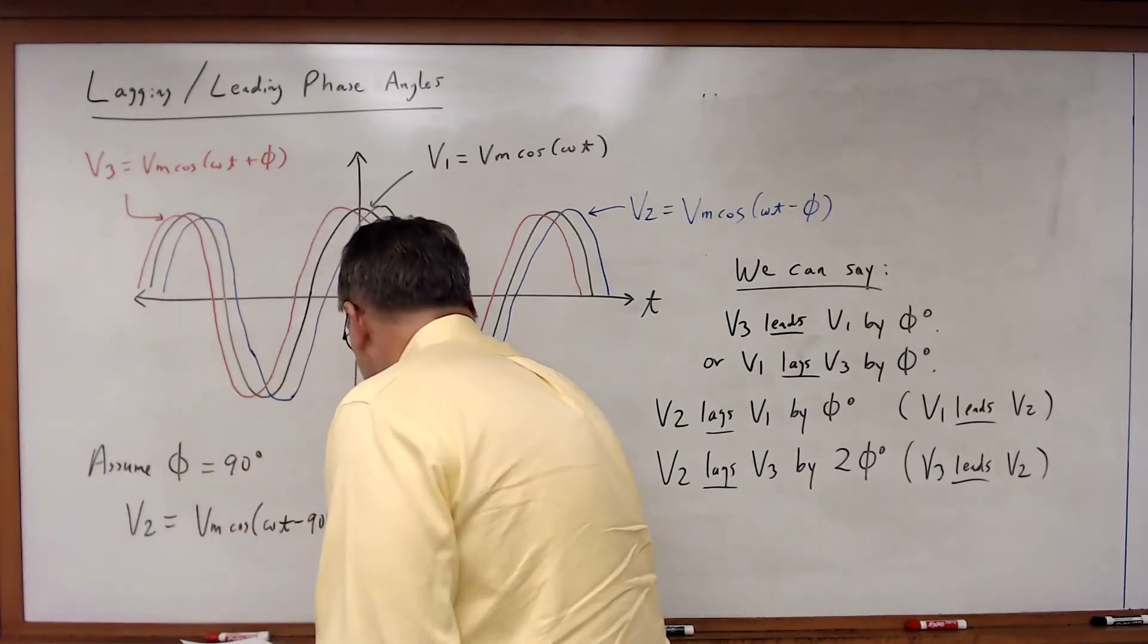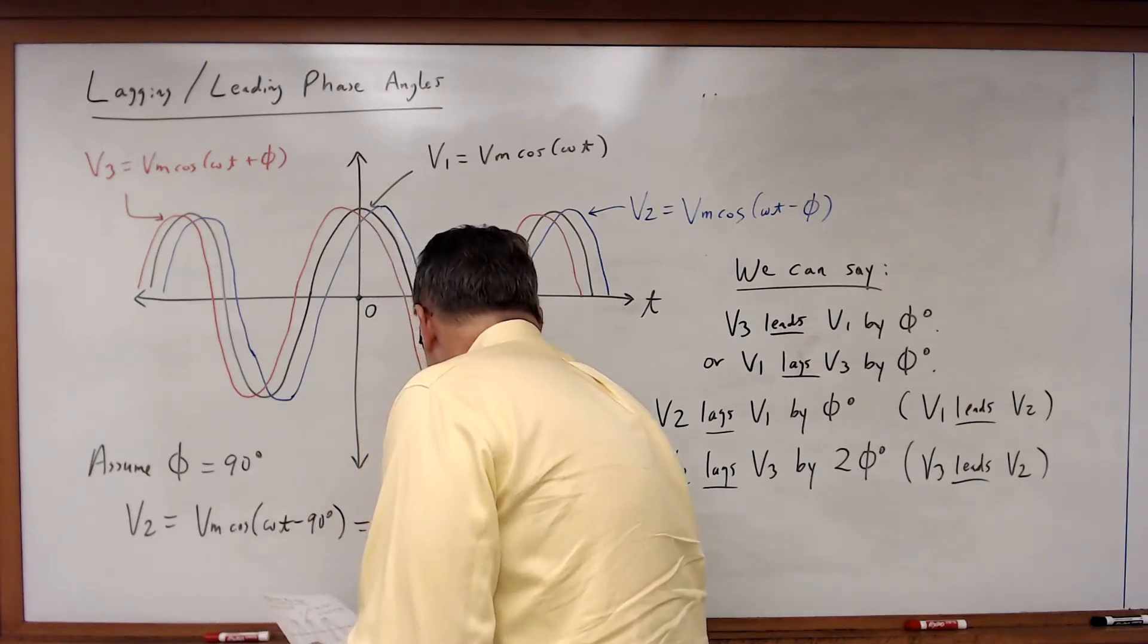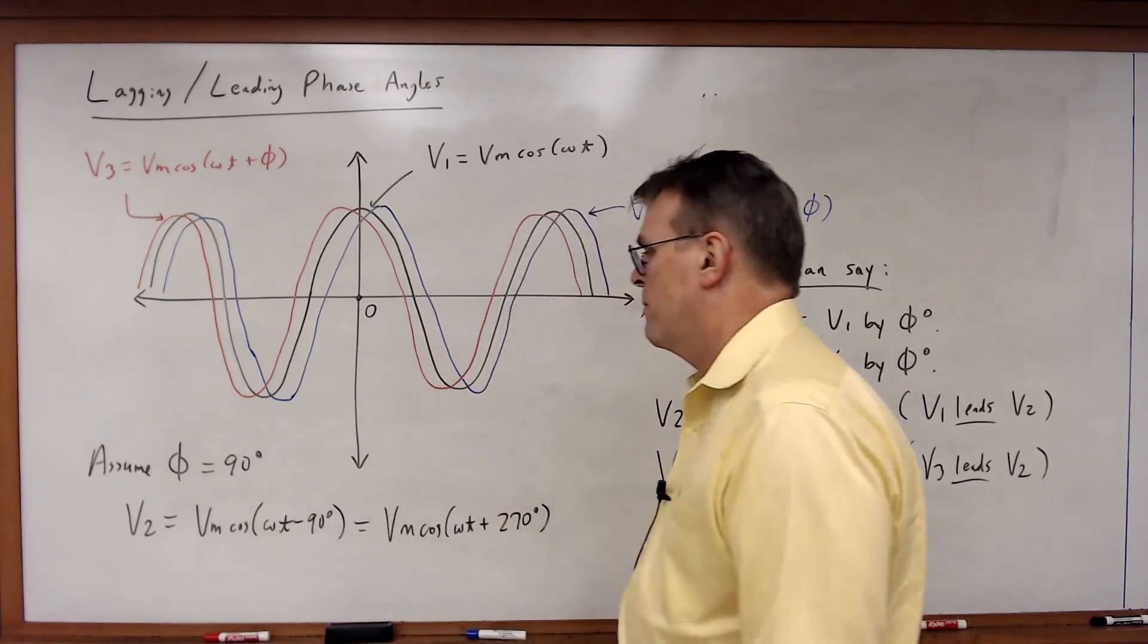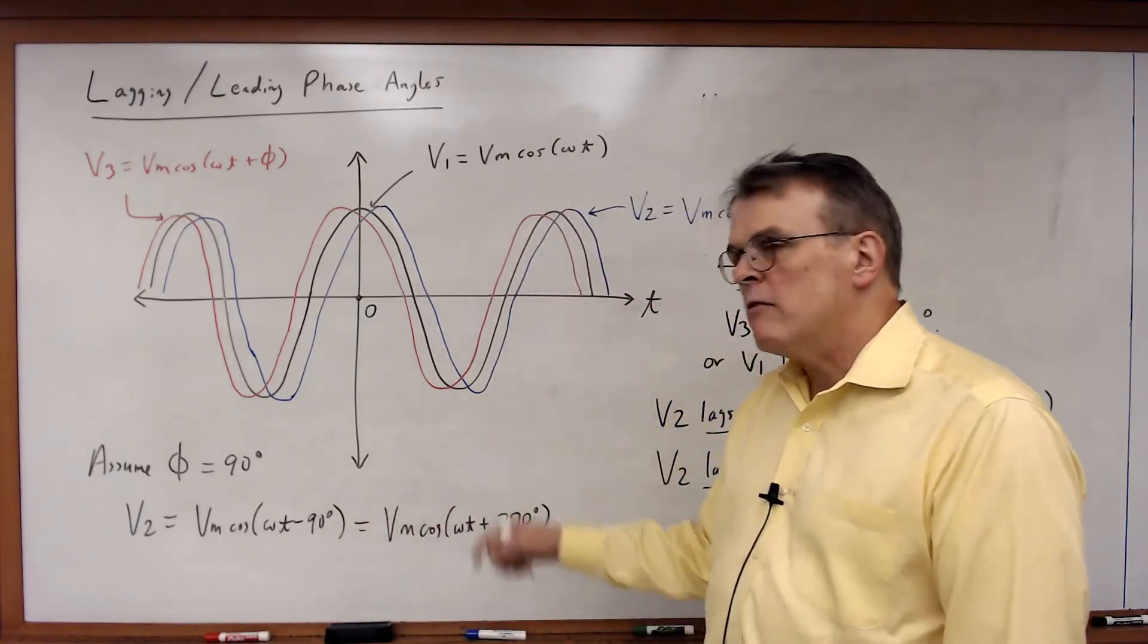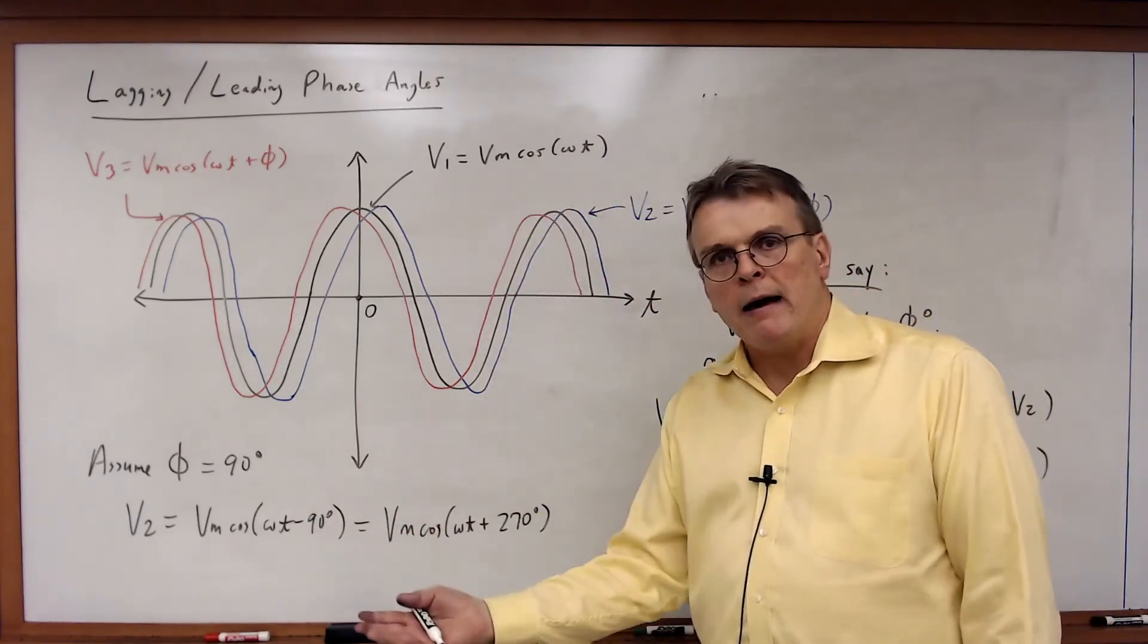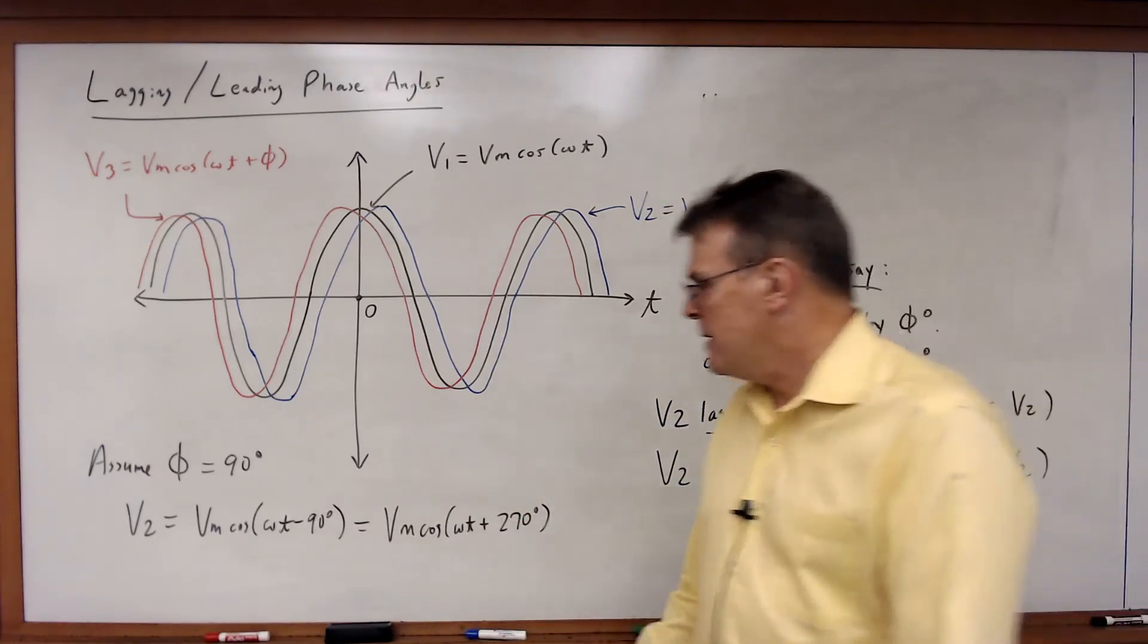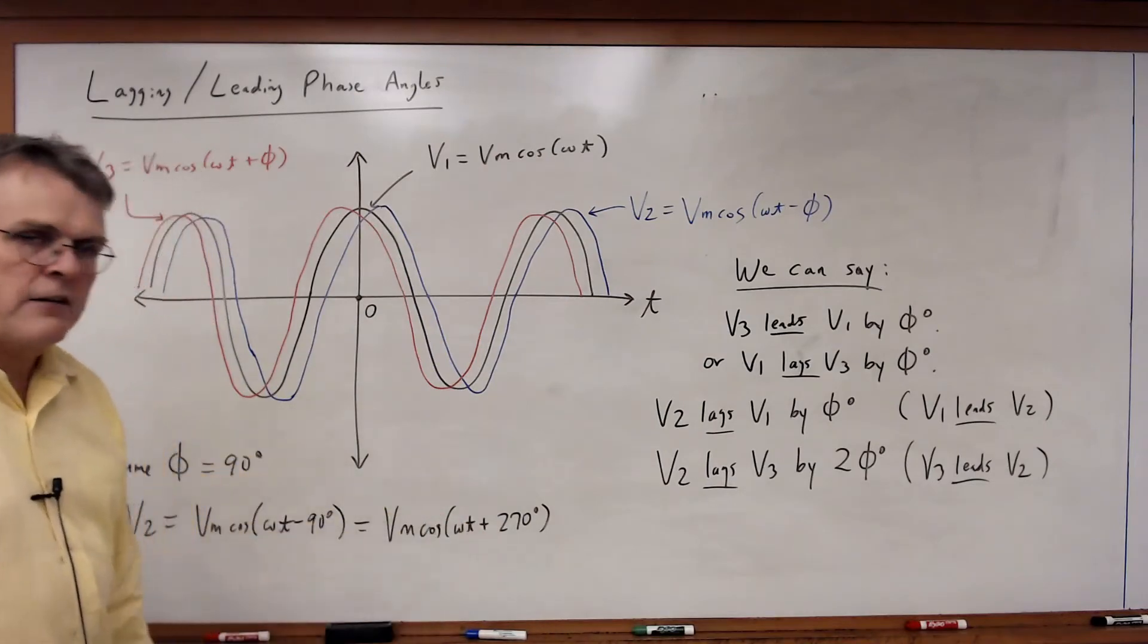Which would also be equal to Vm times cosine omega t plus 270 degrees. In other words, I put in the value for φ, but we know that we can add 360 degrees or 2π to any value and get the same result. So all I did here was I just took the minus 90, added 360, and got 270.